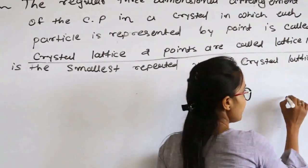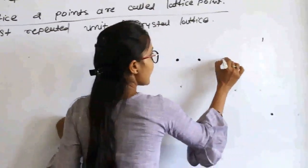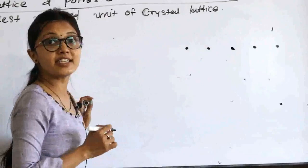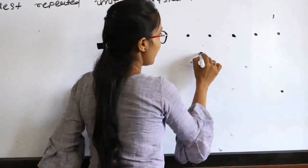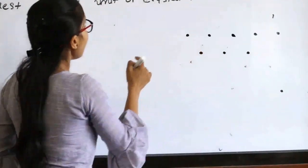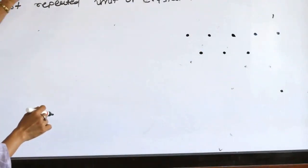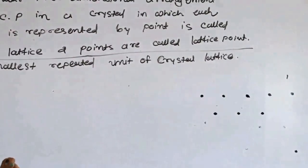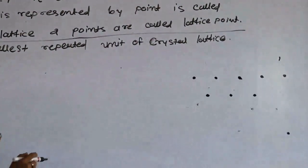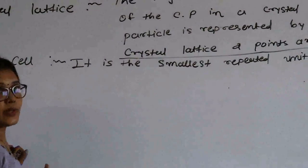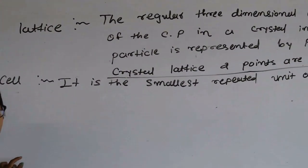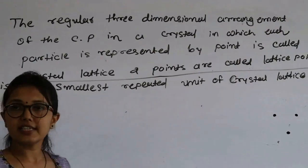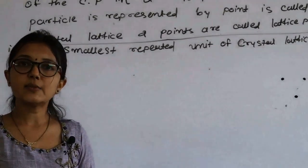All constituent particles are arranged in a regular 3-dimensional arrangement, and each point is indicated by a crystal lattice point. The second concept is unit cell. How do we define unit cell? The smallest repeated unit of a crystal lattice is known as a unit cell.